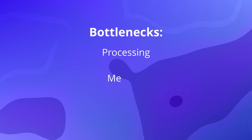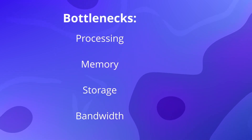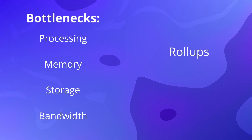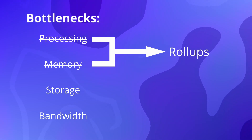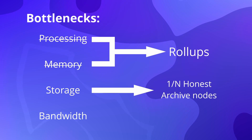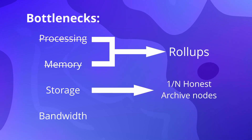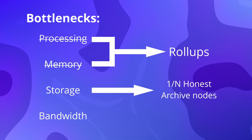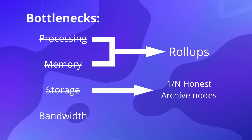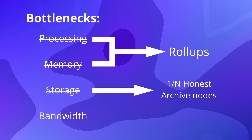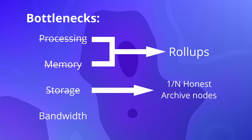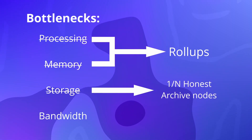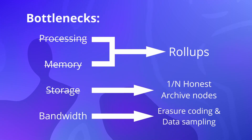To conclude, there are generally four bottlenecks for blockchains: the processing, memory, storage, and bandwidth of the nodes. If you scale a blockchain using rollups, you can offload processing and memory to the rollup nodes, so they can be removed as bottlenecks. Storage is less of a problem because you only need one honest person to store the data, and due to all the data being in Merkle trees, it's easy to verify if someone is sharing valid data with you or not, so it also isn't really a bottleneck. The final bottleneck is bandwidth, which is needed to verify data availability. If you can scale verifying data availability without having to increase the node's bandwidth requirements, then you can start to build a truly scalable and secure ecosystem using rollups, which is what Celestia and Ethereum have started to do.